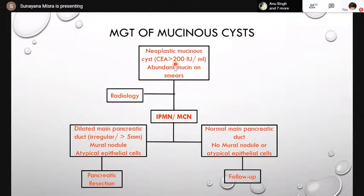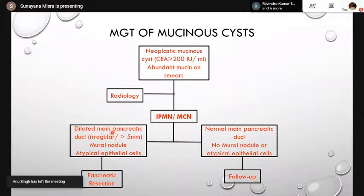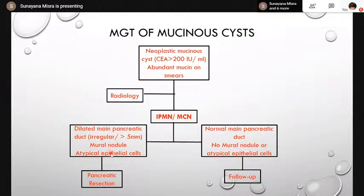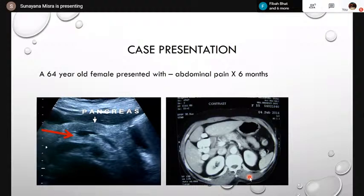Regarding management of mucinous cysts: if CA levels are more than 192–200 IU/mL with abundant mucin on smears from EUS-guided FNA and radiology confirms IPMN or mucinous cystic neoplasm — and if alarming features are present such as dilated main pancreatic duct with irregular contours more than five millimeters, enhancing mural nodules, or discohesive atypical epithelial cells on cytology — pancreatic resection is done. If the pancreatic duct is normal, size is small, no mural nodules, and only mucin with a colloid-like pattern on cytology smears, patient can be kept on regular follow-up.